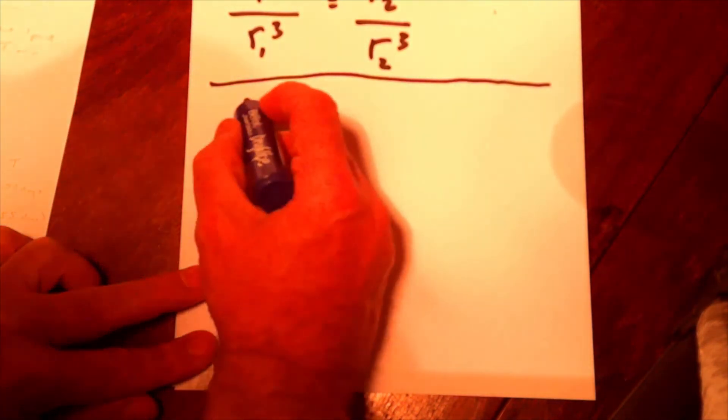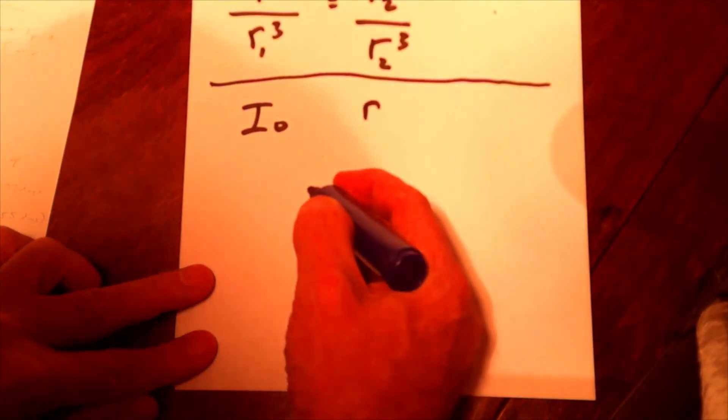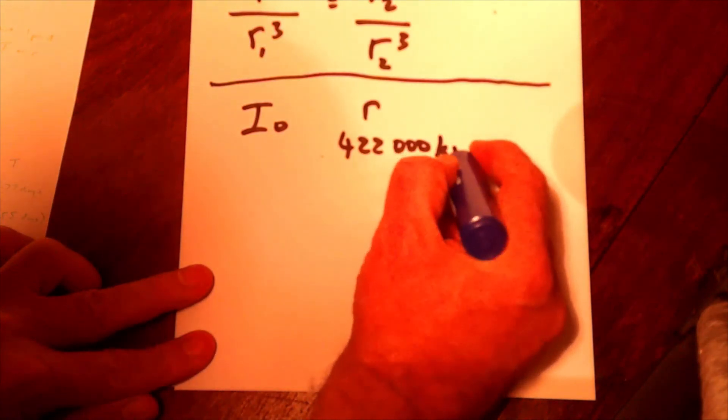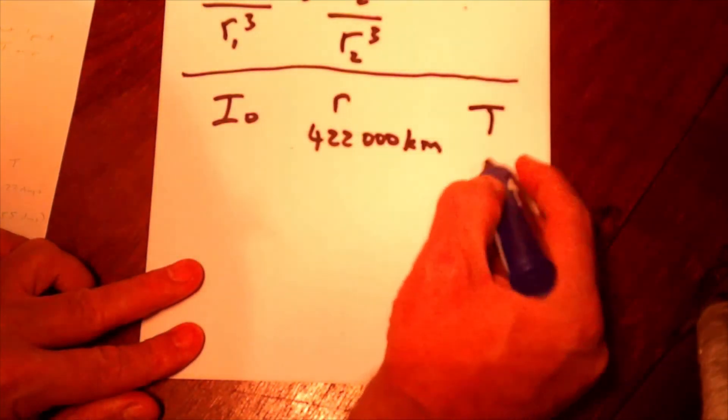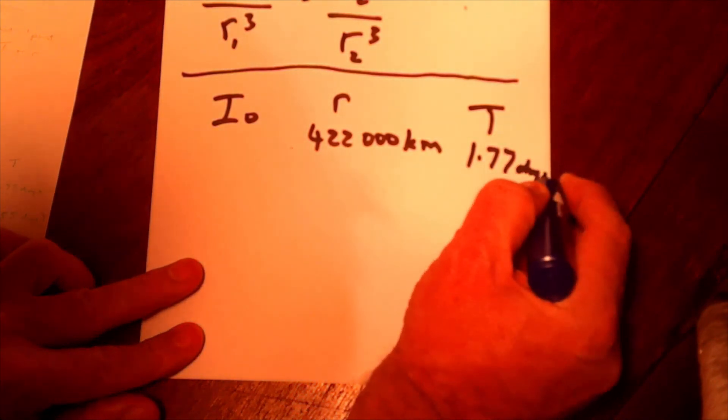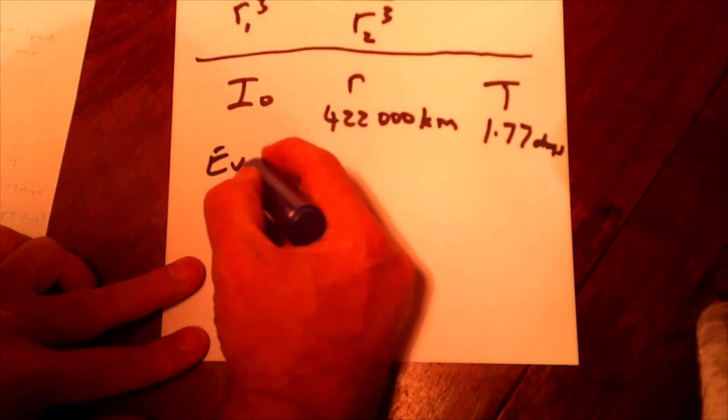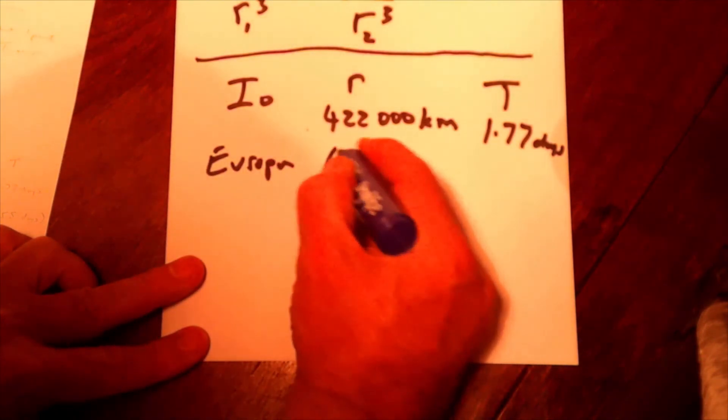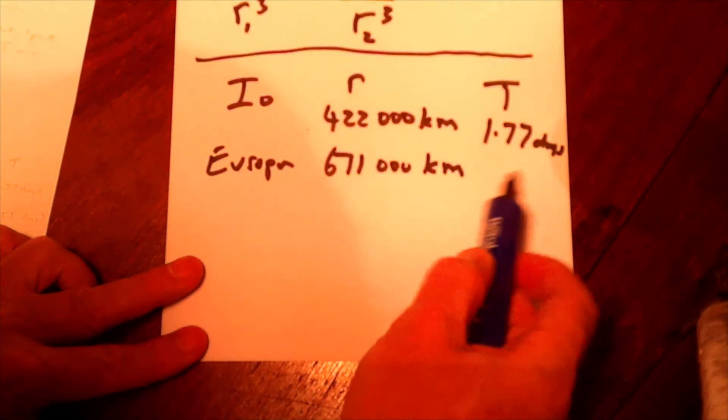Let's look at an example which was on one of the exemplar papers from Edexcel. Jupiter's moons. Now, Jupiter's got lots and lots of moons. One of its moons is called Io, one of the Galilean moons. And the radius of its orbit is 422,000 kilometres. And the period of its orbit, T, is 1.77 days. Now, let's say another of Jupiter's moons is Europa. And let's say I know that the radius of its orbit is 671,000 kilometres. And what I need to do is work out the period of its orbit.